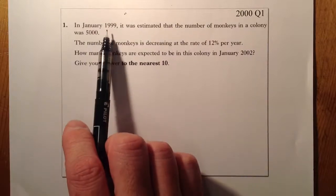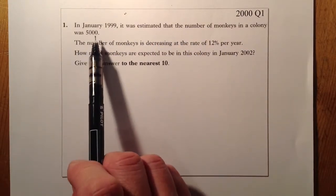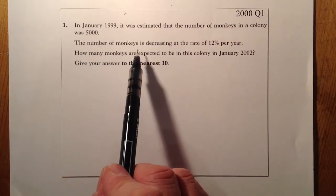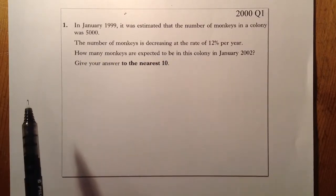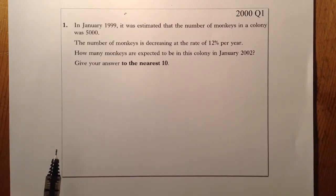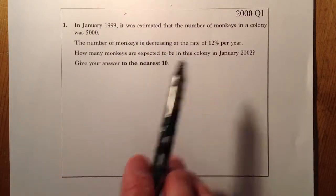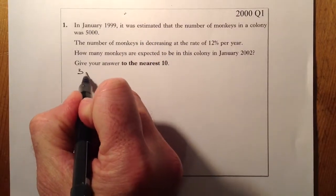In January 1999, it was estimated that the number of monkeys in a colony was 5,000. The number of monkeys is decreasing at a rate of 12% per year. How many monkeys are expected to be in the colony in January 2002? So that's going to be a three-year period there. So I'm interested in three years.